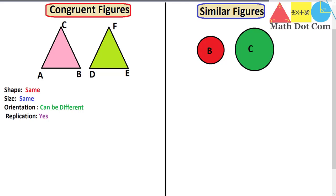I'll also tell you which properties are must for identifying congruent figures and which are just for your understanding in various scenarios. First of all, we check the shape of the two figures. Here we have two triangles, ABC and DEF. The shape of these two figures is the same — both are triangles — but we can't say they are congruent based on shape alone. This is the first condition.